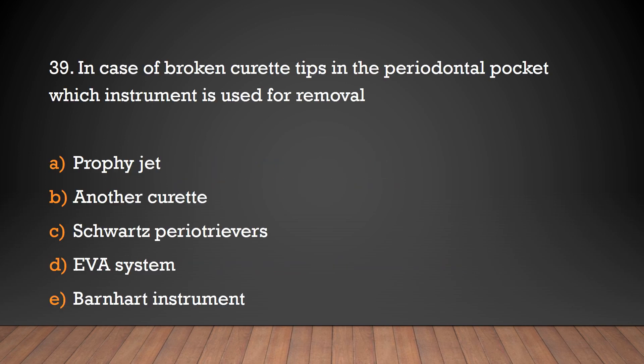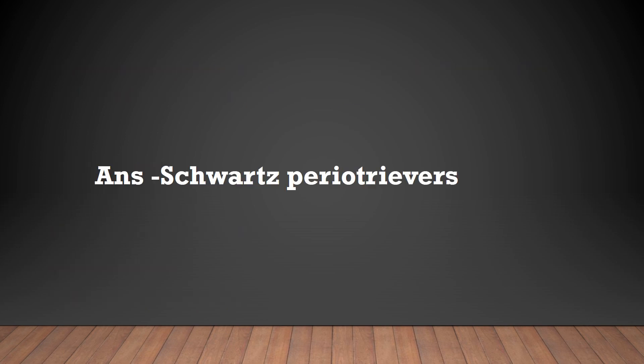In case of broken curette tips in the periodontal pocket, which instrument is used for removal? ProfiJet, another curette, Schwartz Periotriever, EVA system, or Barnhart instrument. The answer is Schwartz Periotriever.